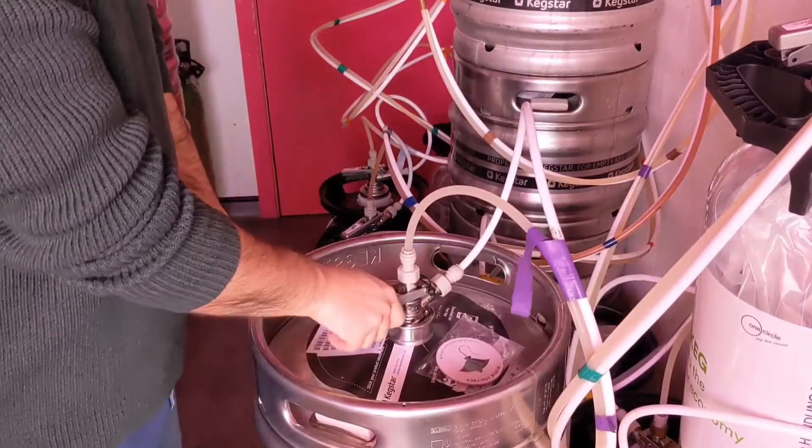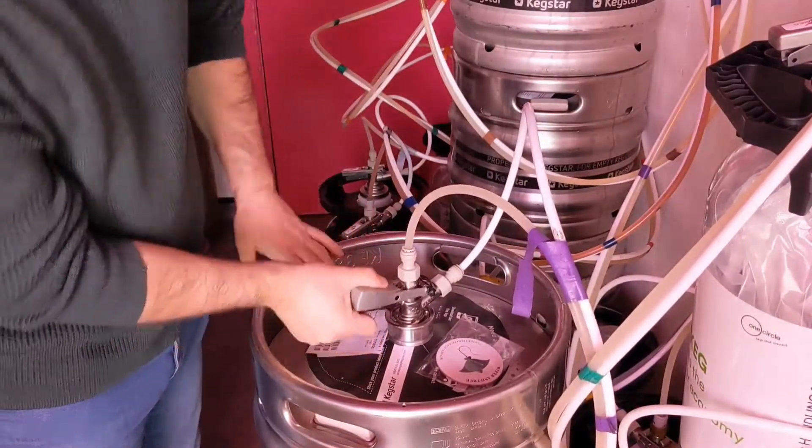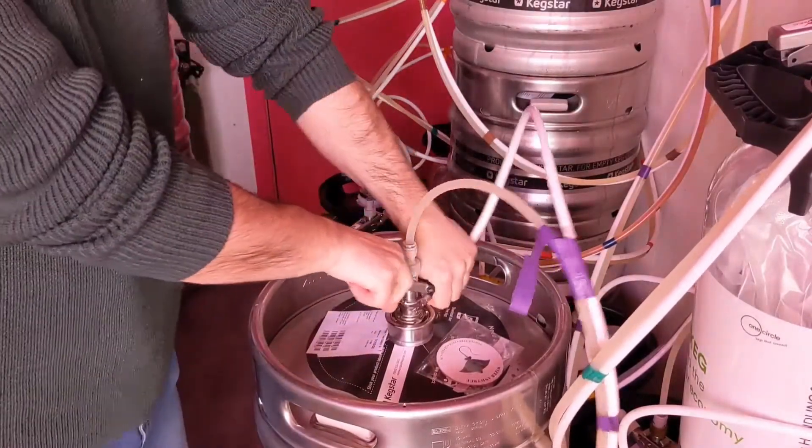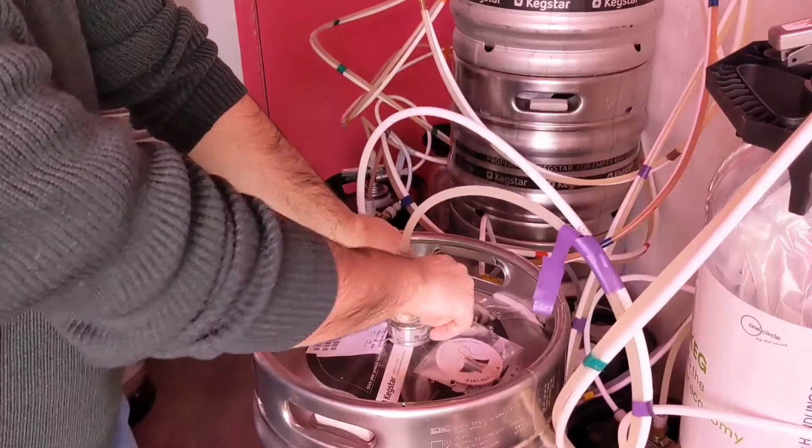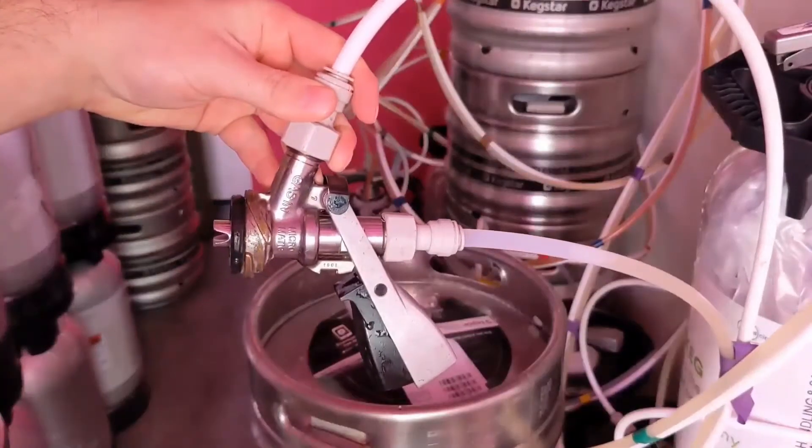You can now disconnect the coupler. Squeeze the handle to release and twist a quarter turn anti-clockwise.